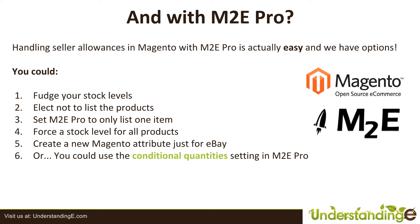We have a sixth option, and that's the one we're going to show you how to do in Magento and M2E Pro: you can use the conditional quantities setting in M2E Pro. A quick note here is that there is software out there which will do this for you that you have to pay for, but this is included free right now with Magento and the M2E Pro extension because it's subsidized by eBay. Let's jump across to our Magento system and have a look at this conditional quantities setting.